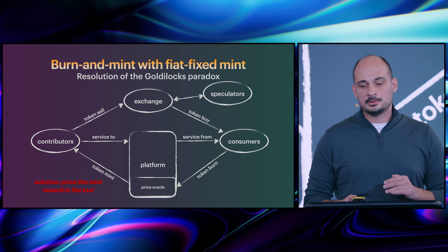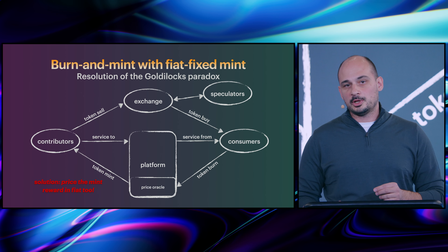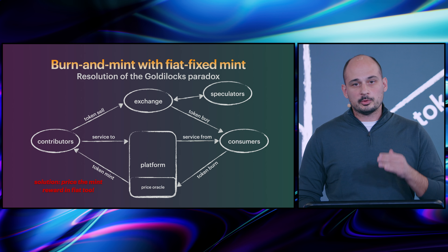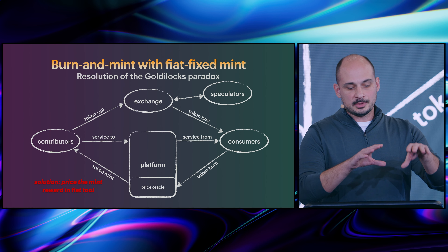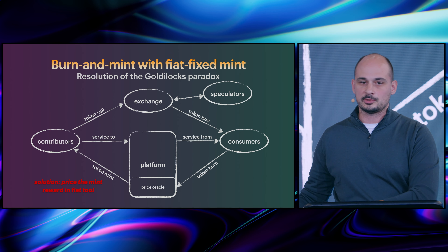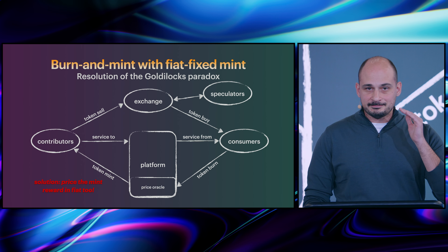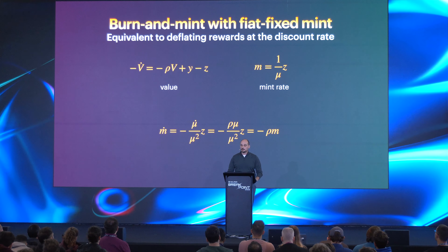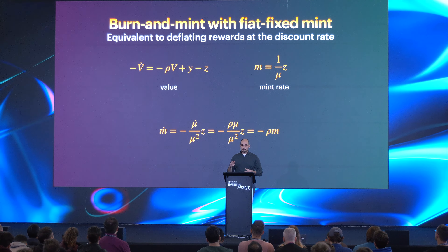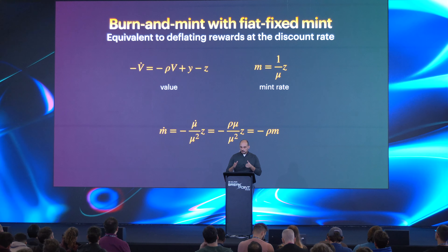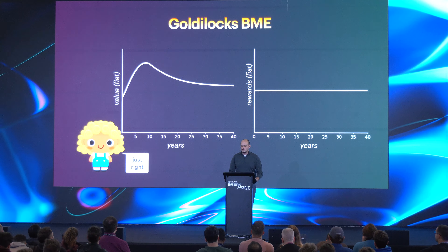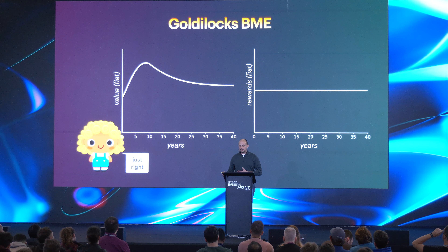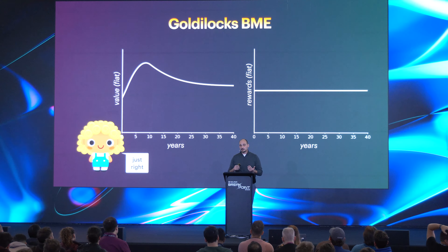The good news is we do have a solution: extend the price oracle from the burn side also to the mint side. Price the mint rewards in fiat to contributors. Instead of saying 'I'll give you a certain number of tokens on a deflationary schedule,' just say 'I'm going to give you five dollars a day.' If z is that fiat amount, then the mint equals z divided by mu — the token price. Taking the derivative of m in that case, you get m-dot equals negative rho times m, which is exactly Goldilocks — just right. The simulation shows flat rewards by design and high sustained value, so everyone is happy: contributors and token holders alike.